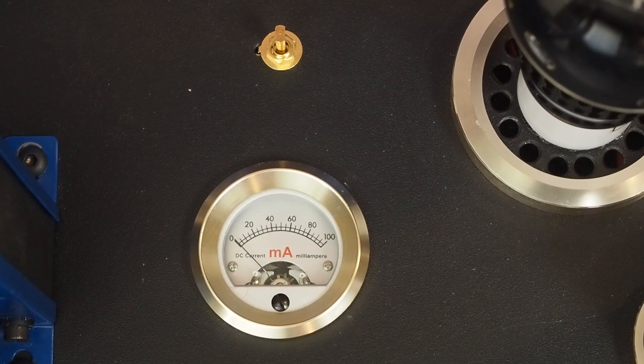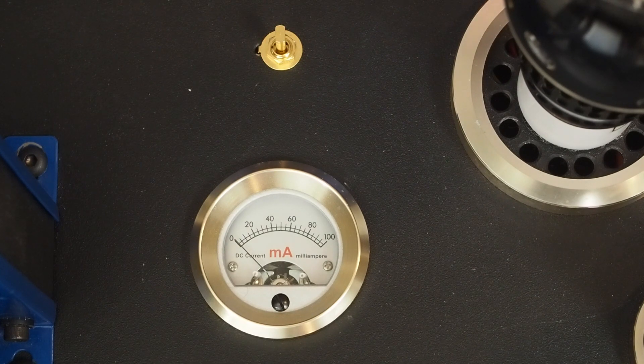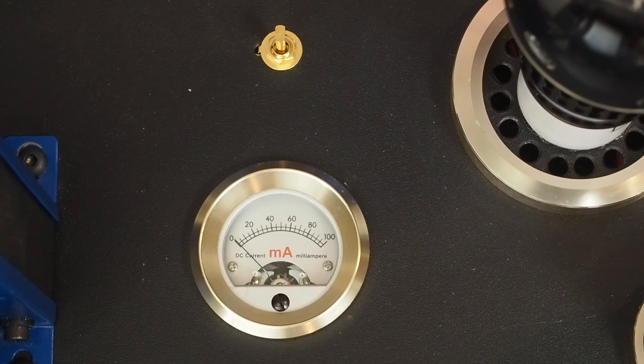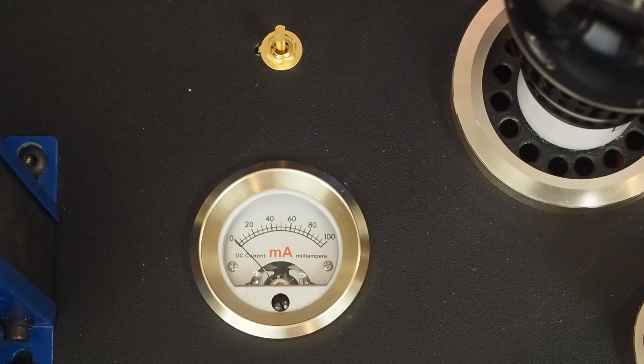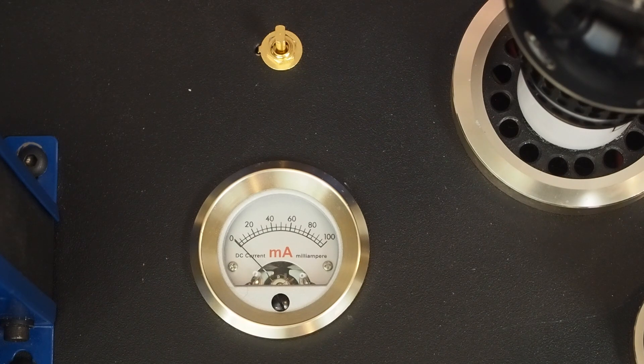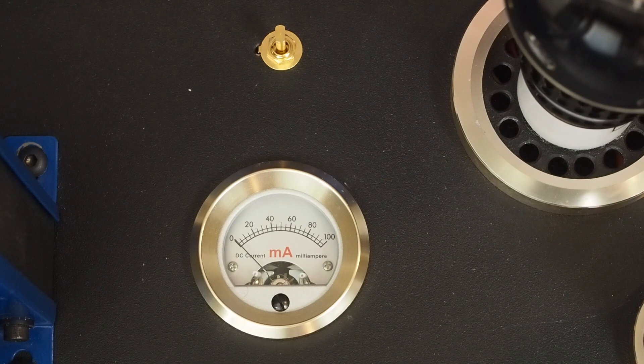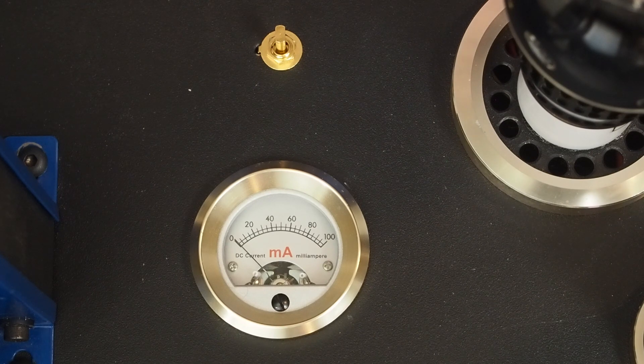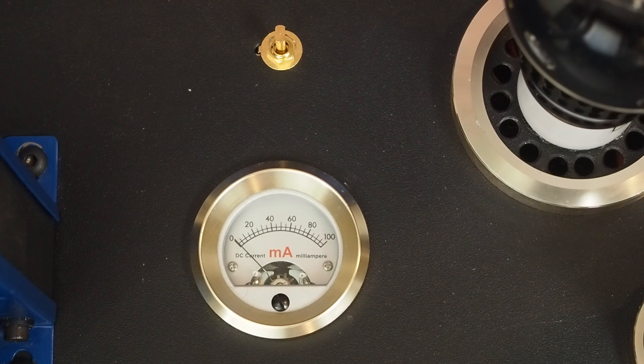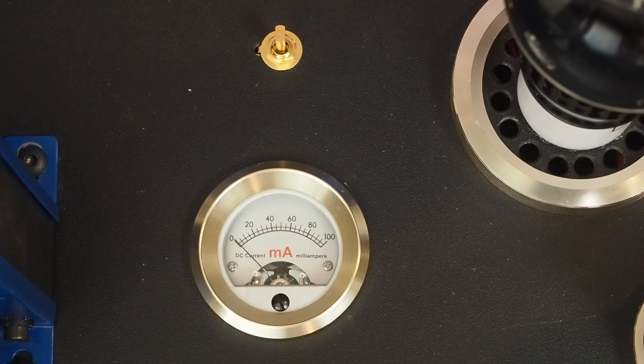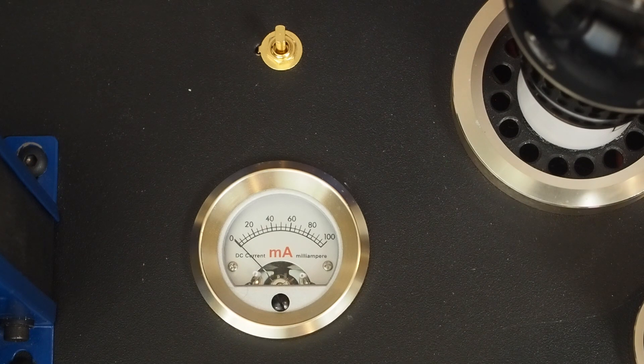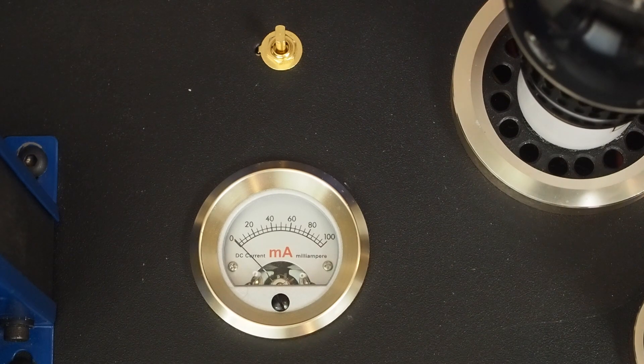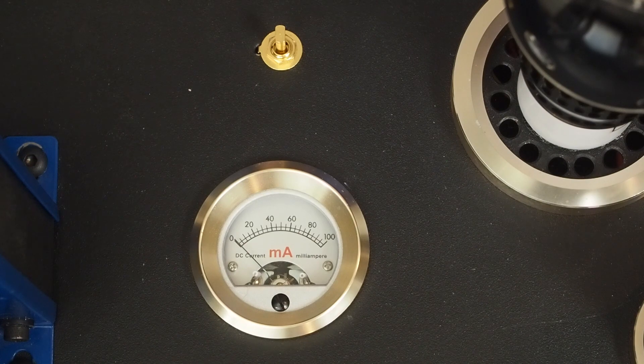The nice thing about this meter is it's not in series with the cathode of the tube. It uses shunt-type metering that uses the cathode resistor as the shunt resistor. This goes from the cathode to ground and is calibrated to the cathode resistor in your amp. This is mainly designed for a cathode or self-biased amp, but you can use it with a fixed bias amp if you use a 10 to 12 ohm sense resistor, which you can calculate by their formula.